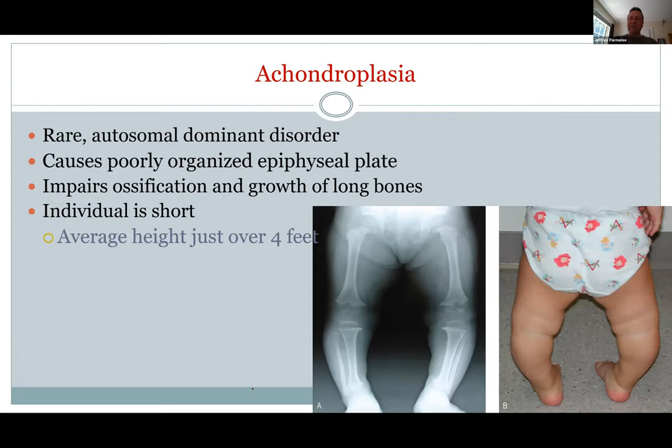Achondroplasia is a condition where the epiphyseal plate has a real issue and you end up not having proper growth at those growth plates. Because the flat bones of the head don't have that issue, you'd have a normal head and normal mental development. But when you look at the limbs, they'll be disproportionately short because of this issue with the cartilage at the epiphyseal plate.